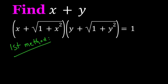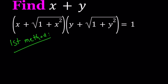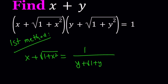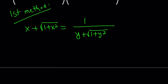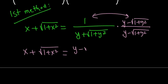For my first method, I'm going to use the power of conjugates. Let's go ahead and isolate x plus the square root of 1 plus x squared, and divide both sides by this. You can rationalize the denominator on the second term by multiplying it by the conjugate — so it's going to be y minus the square root of 1 plus y squared, divided by the same thing. When you do that, the left-hand side is going to be unchanged, and the right-hand side is going to give you y minus the square root of 1 plus y squared.